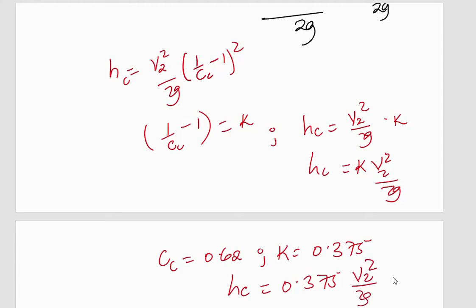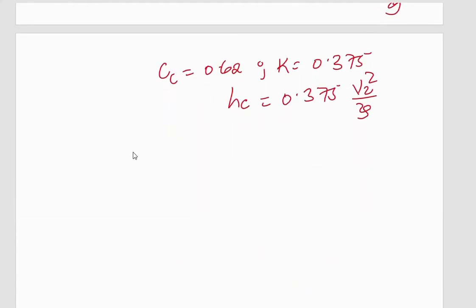Now if in the future, if K cannot be calculated because we do not have Cc, then we will always take K to be 0.5, so that hc will be equal to 0.5 V2 squared over 2g.